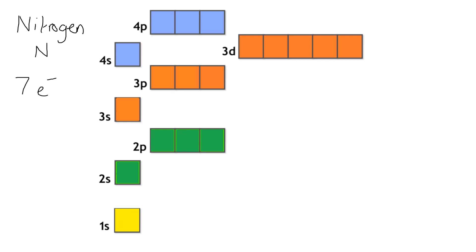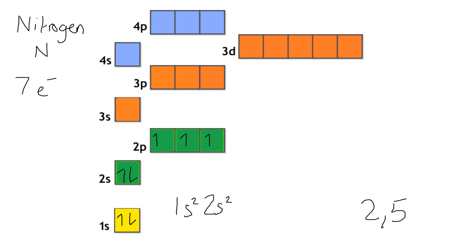If we get to nitrogen, the Bohr configuration would be 2, 5. Remember the second shell can hold up to eight electrons. You'd have 1s2, 2s2 — that's four of the electrons used — so we've got three electrons left. We put one in each box within the 2p, all with parallel spin. So the configuration would be 1s2, 2s2, 2p3.